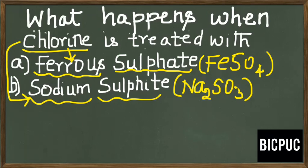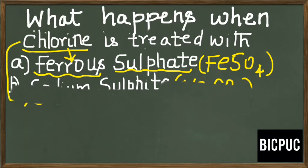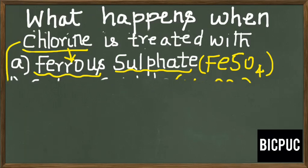Let me just write the reaction for both cases and explain how this reaction actually proceeds. So let us write the equation for the first case, that is ferrous sulfate reaction with chlorine.